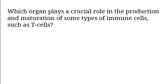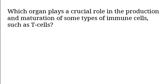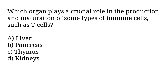Which organ plays a crucial role in the production and maturation of some types of immune cells such as T-cells? A) Liver, B) Pancreas, C) Thymus, D) Kidneys. The correct answer is option C — Thymus.